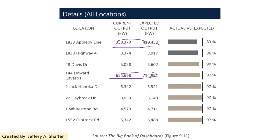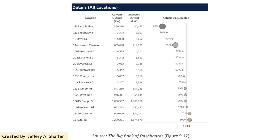One solution — not necessarily the best, but a good idea — is to use size to indicate quantities and position to indicate the relationship between actual and expected values, along with a reference line at 100%. By doing this, we can show both the quantities and the performance in each category together.